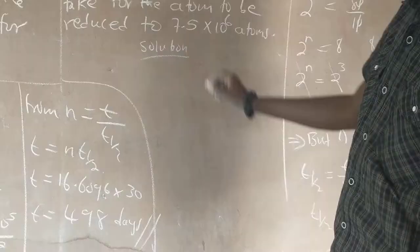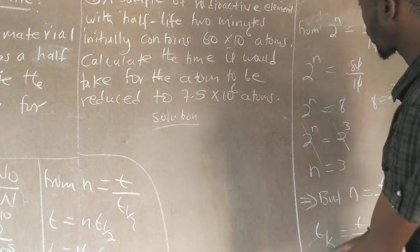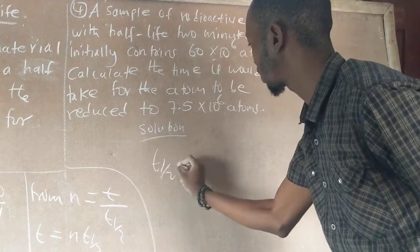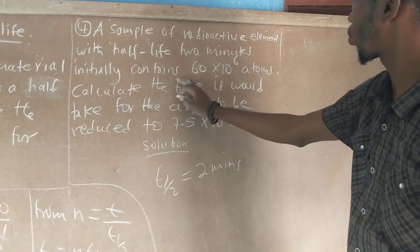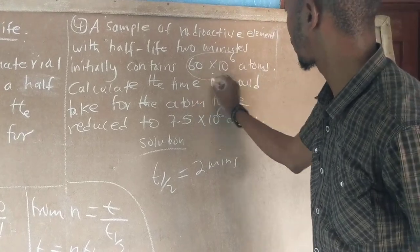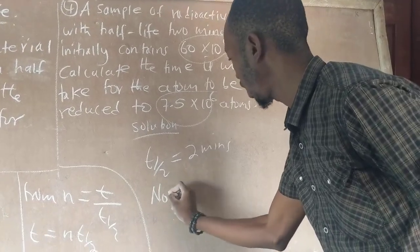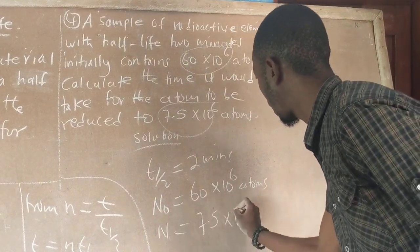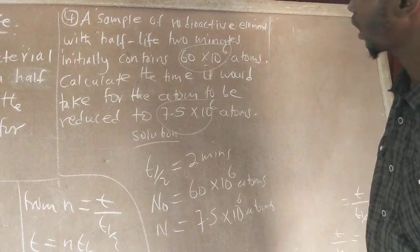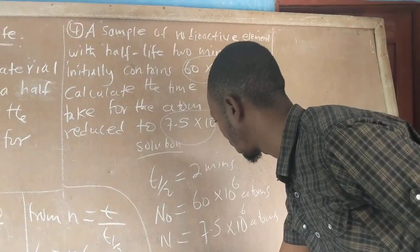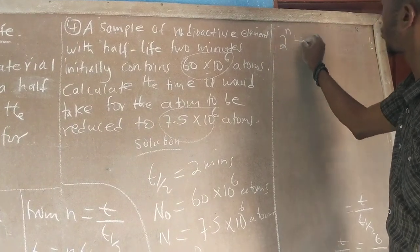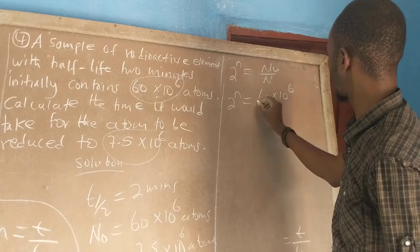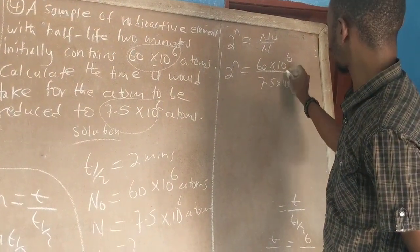Example four: a sample of radioactive elements with a half life T½ of 2 minutes initially contains 60 times 10 to the power 6 atoms. Since 60 times 10 to the power 6 is greater than 7.5 times 10 to the power 6, N₀ is 60 times 10 to the power 6 atoms and N is 7.5 times 10 to the power 6 atoms. We are required to calculate the time t.